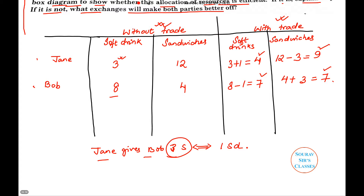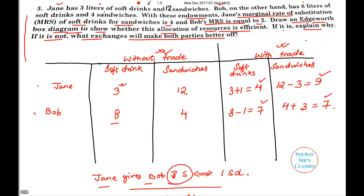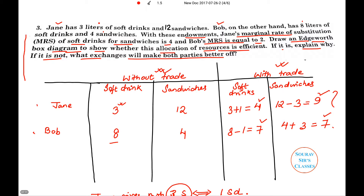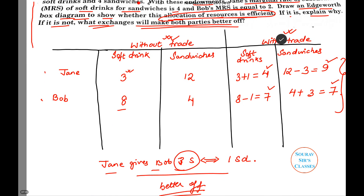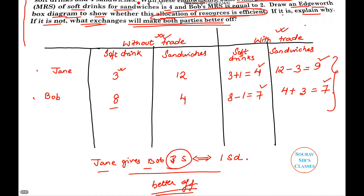In this kind of deal, both are better off, and that's why the trade takes place — trade makes both of them better off. The exchange makes both parties better off, and this can be termed as an efficient allocation of resources. I hope this tutorial on general equilibrium and economic efficiency was helpful. Please hit the like button, subscribe to our channel, and thank you so much for watching.